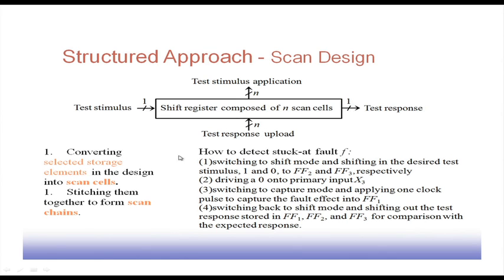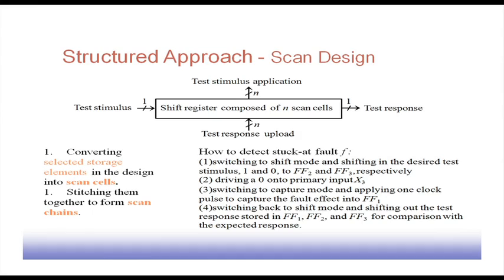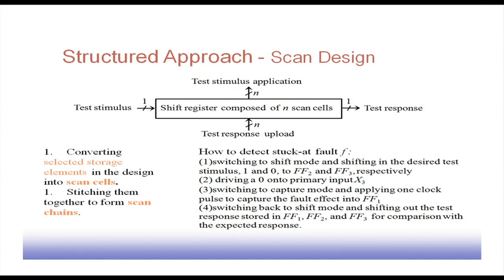Here we have assumed that if the circuit has n flip-flops, then all those n flip-flops are converted into scan cells. If only a selected range of them are converted, because of some reason we will see later, that may result in a partial scan type of design. We then need to connect all these flip-flops to form a scan chain.